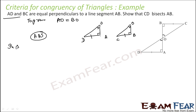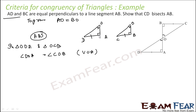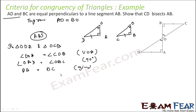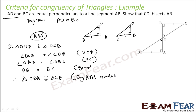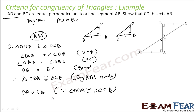So let's say triangle ODA and triangle OCD. Angle DOA is equal to angle COB — vertically opposite angles. Angle OAD is equal to angle OBC — both 90 degrees. DA is equal to BC — that is given. So triangle ODA is congruent to triangle OCB by AAS. Since they are congruent, OA is equal to OB.